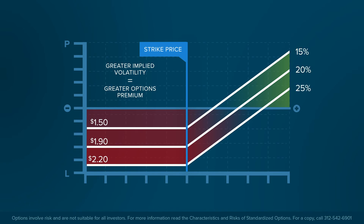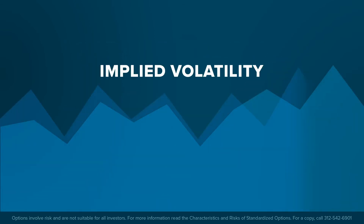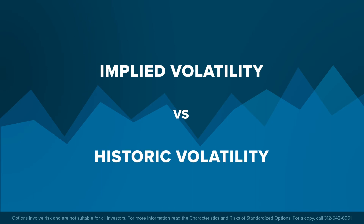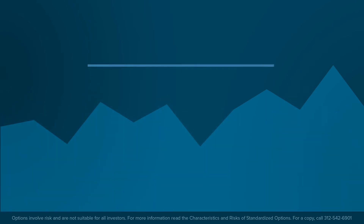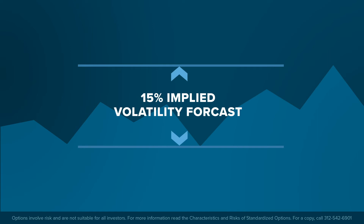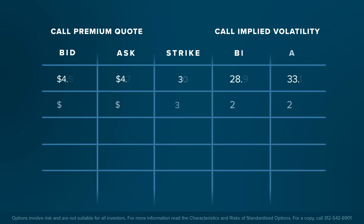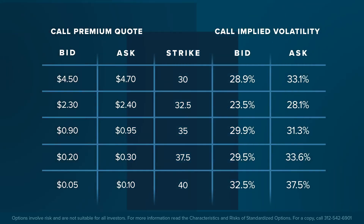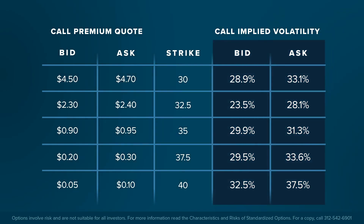Implied volatility does not suggest whether prices will go up or down, only that prices will move. Implied volatility, or a future outlook on price movements, should not be confused with historic volatility. While historic volatility may be a guide to determining implied volatility, an options pricing model requires an estimate of implied volatility during the option contract period. Option market participants know the underlying price, strike price, interest rate, and number of days to expiration. Current option prices are readily available from the exchanges, and therefore implied volatility can be backed into by an options pricing model.